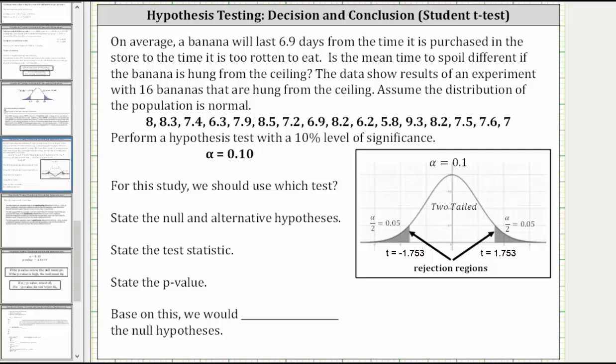Welcome to an example of a one-sample hypothesis test involving a student t-test. On average, a banana will last 6.9 days from the time it is purchased in the store to the time it is too rotten to eat. Is the mean time to spoil different if the banana is hung from the ceiling?